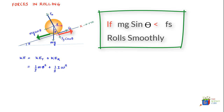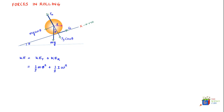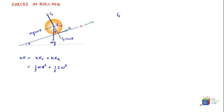With this understanding, let's write the equations of motion for the rolling body — one for linear motion and one for rotation. Considering the positive x-direction along the plank, the forces give: fs minus mg sinθ equals m·ax. Here ax is the linear acceleration of the body in the x-direction, which must be differentiated from the tangential acceleration due to rotation.